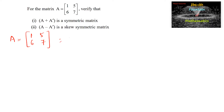So here we can write A transpose is equal to [[1,6],[5,7]]. The first column will become the first row and the second column will become the second row. Now let's find A plus A transpose.